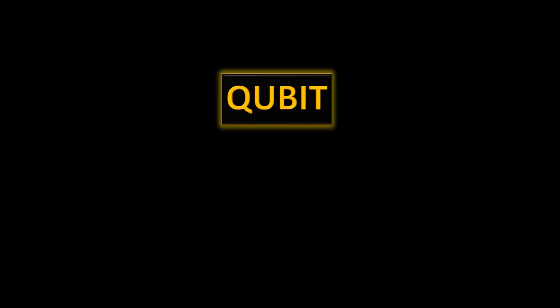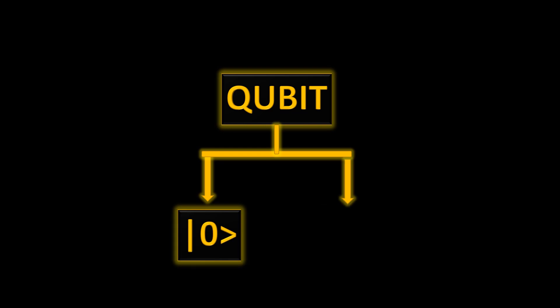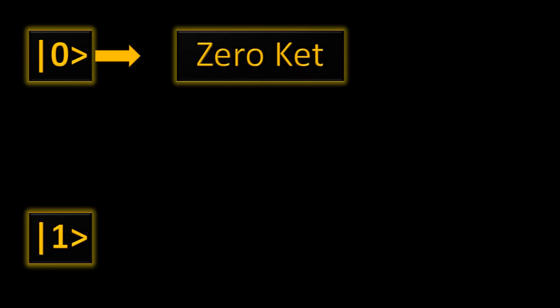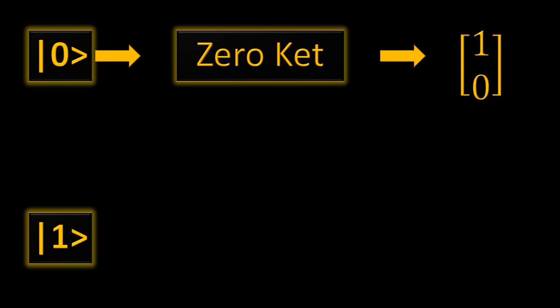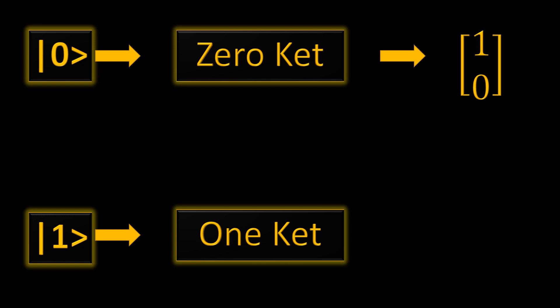We saw that upon measurement a qubit can take either of two states. The first state is called the zero ket, which is nothing but a two-by-one vector [1, 0]. Similarly, we have the one ket, which is another vector [0, 1]. These are the two vectors represented in quantum computing, but they are just simple vectors.